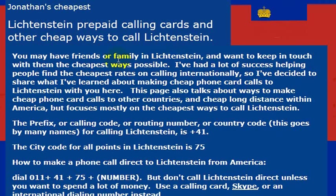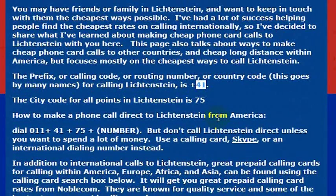In any case, if you want to call one of the smallest countries in the world, you can, simply by knowing the country code for the country, which is 41. In order to reach someone in Liechtenstein, all you would do is dial 011, then 41 for the country code, then 75 — which is actually the beginning of all numbers in Liechtenstein.